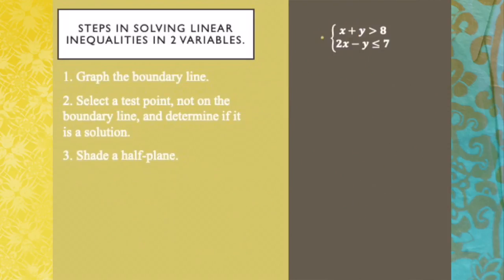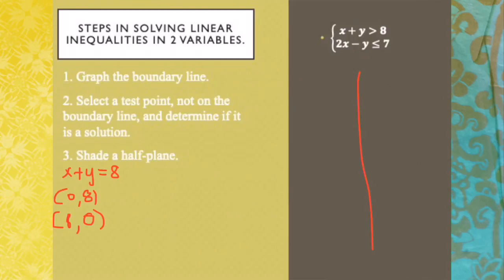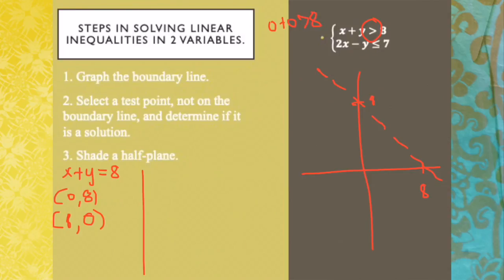What if we have two or more inequalities? The process is the same. The first step is to graph the boundary line for each inequality. For the first one, when x is 0, y is 8, and when y is 0, x is 8. We plot those points. Since the inequality sign says greater than, it is a broken line. Using test point (0, 0): 0 plus 0 greater than 8 is no, so we shade the opposite side.